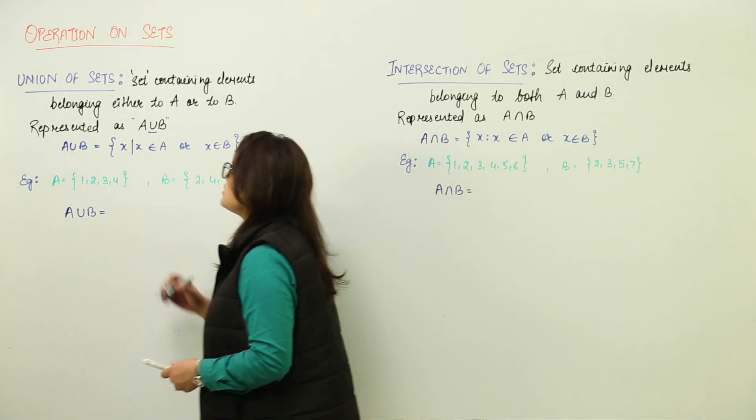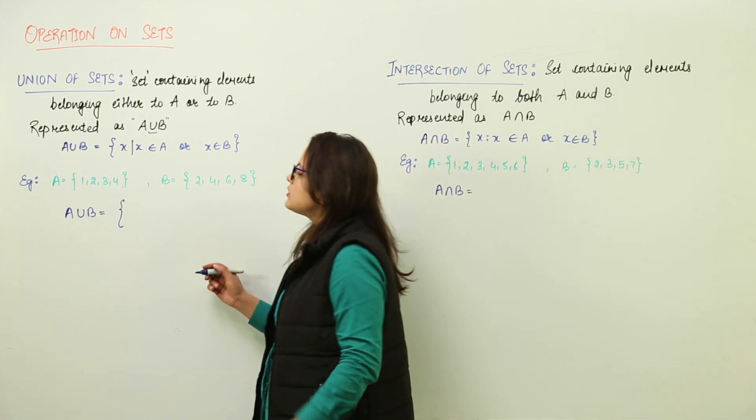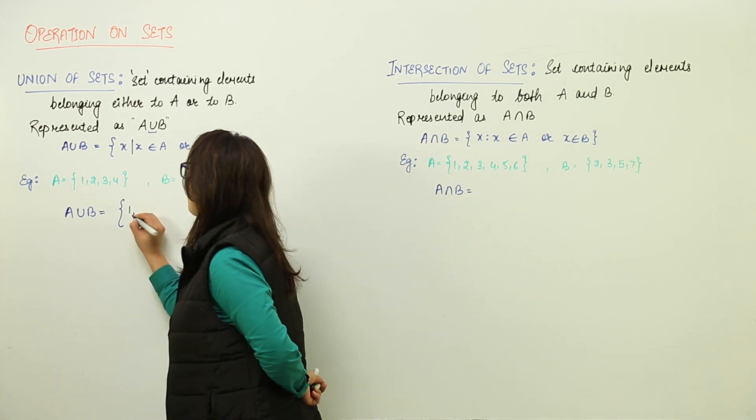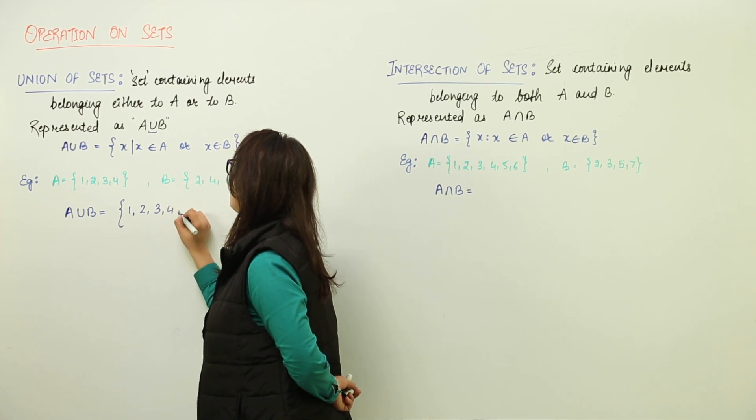As I discussed, this is the set containing elements from either A or B, so it is going to contain 1, 2, 3, 4, 6, and 8.